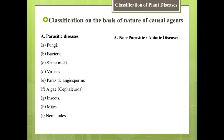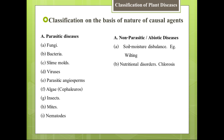Now we will see which are abiotic or non-parasitic diseases. Number one is soil moisture imbalance — if water is too much or too little, this can cause disease in plants. Number two is nutritional disorders — deficiency or excess of nutrients can also cause disease.